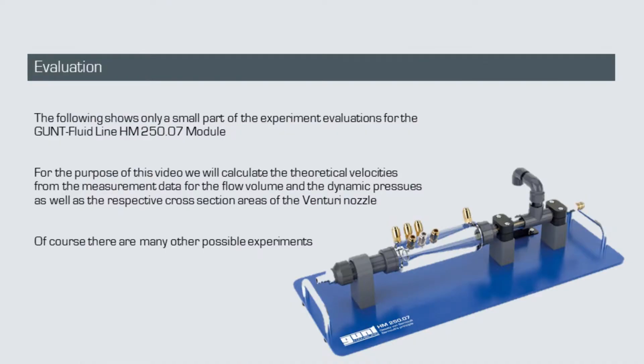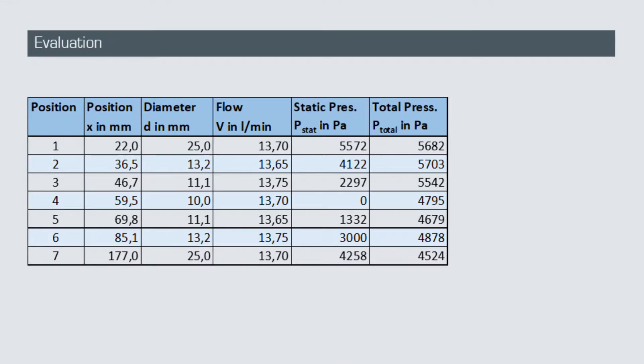In the following evaluation, we will calculate the theoretical velocities from the measurement data for the flow volume and the respective cross-section area of the Venturi nozzle, as well as the dynamic pressures. After importing the experiment data, it may look like this. For the purpose of this video demonstration, let's focus on one particular measurement, let's say at position 2 of the Venturi nozzle.